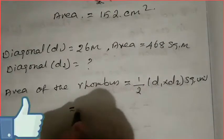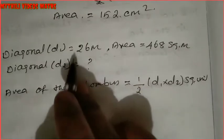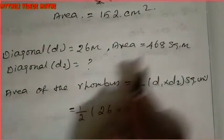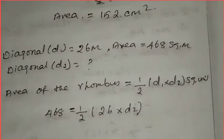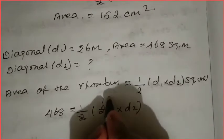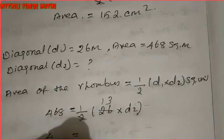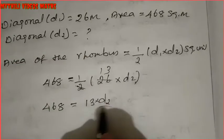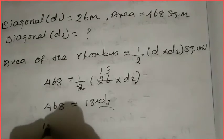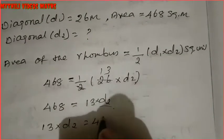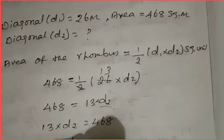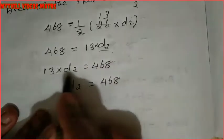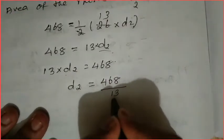We use this formula only. Substituting: 1/2 × 26 × d2 = area. d2 is what we need to find, so keep it as it is. On the left hand side, area is given as 468. We cancel: 2 cancels with 26 to give 13. So 468 = 13 × d2, which gives 13 × d2 = 468.